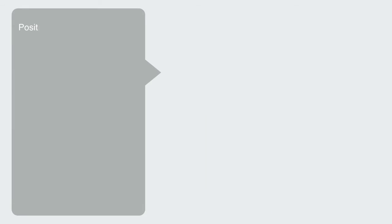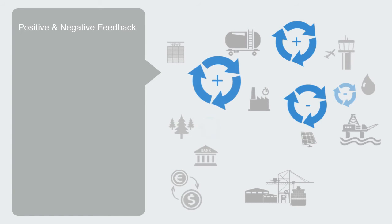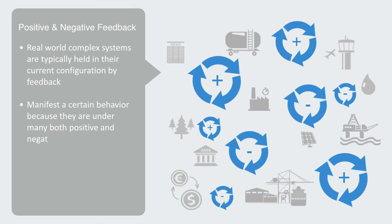Within complex systems, these causal loops do not exist in isolation, but there are in fact many different positive and negative feedback loops and links interacting. And thus, we need to draw a whole map of these different causal interactions and loops in order to understand the system's overall dynamics. Real-world complex systems are typically held in their current configuration or manifest a certain behavior because they are under many different positive and negative feedback loops, with the strength of these different loops changing over time to create some dynamic state.